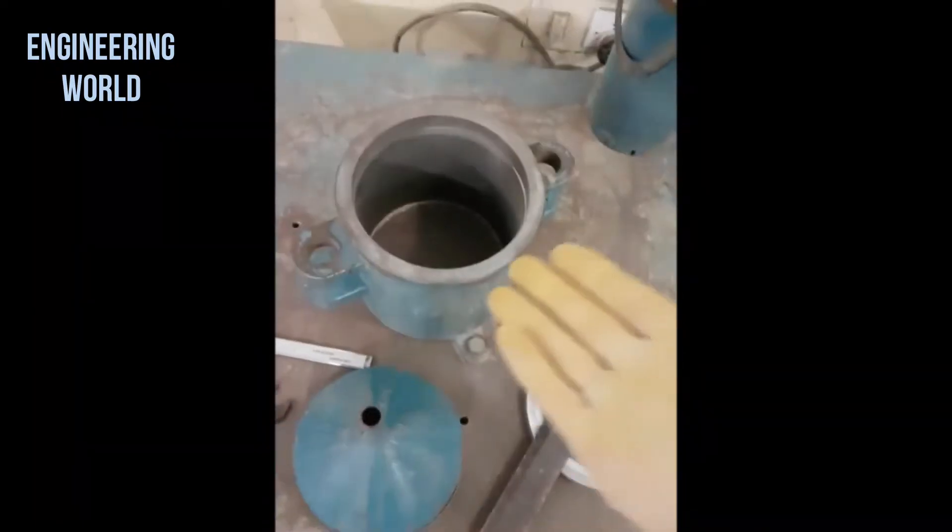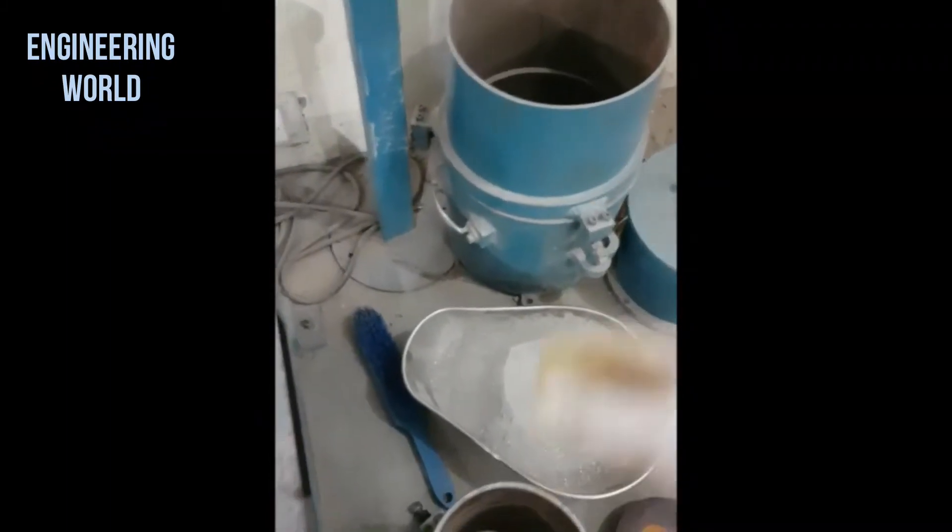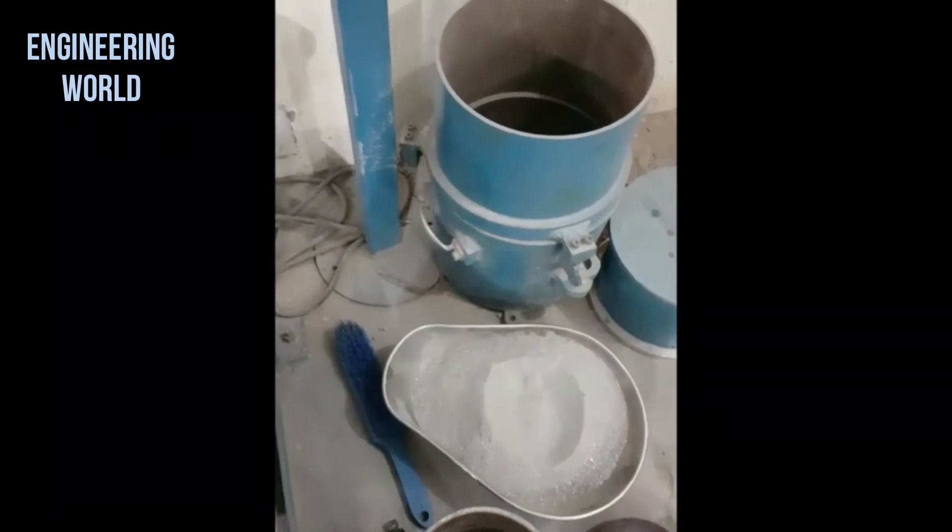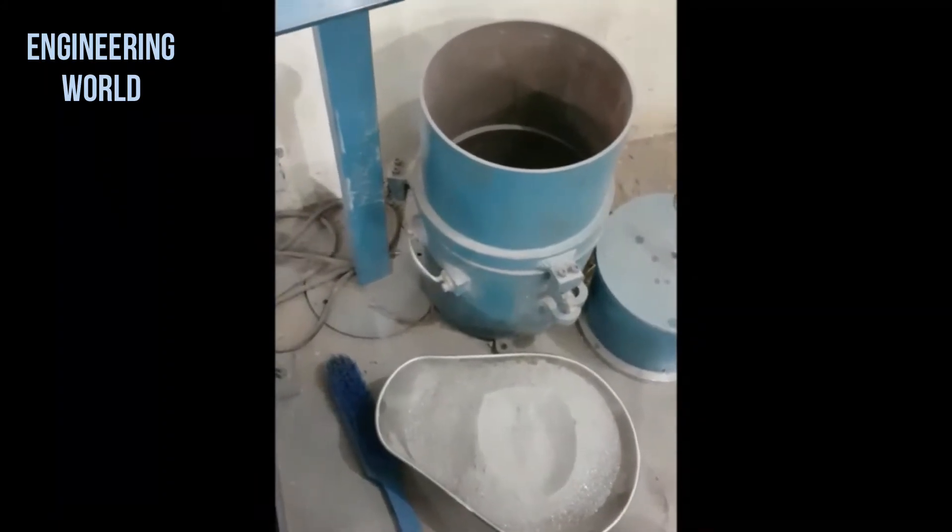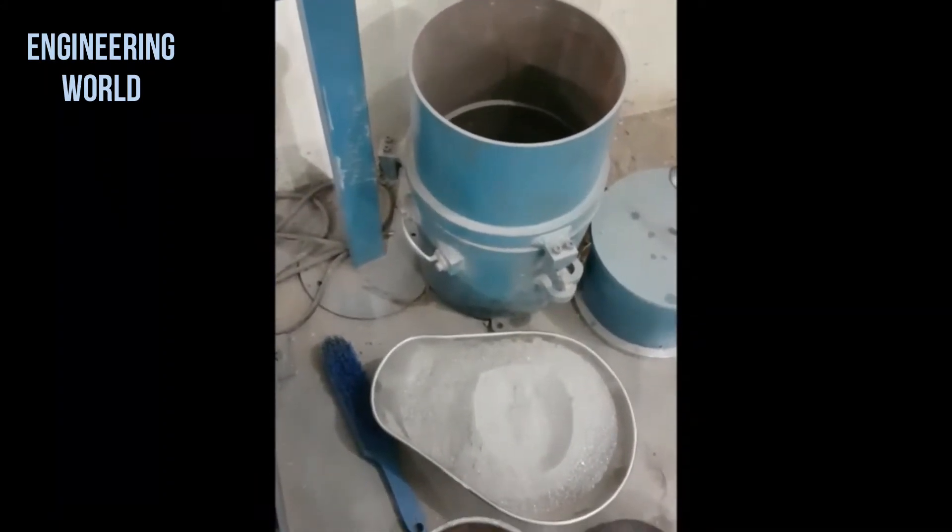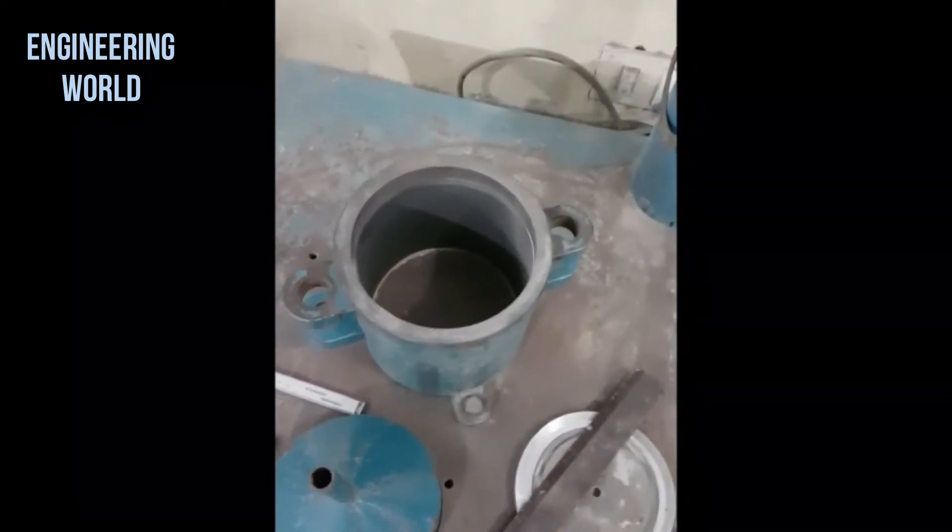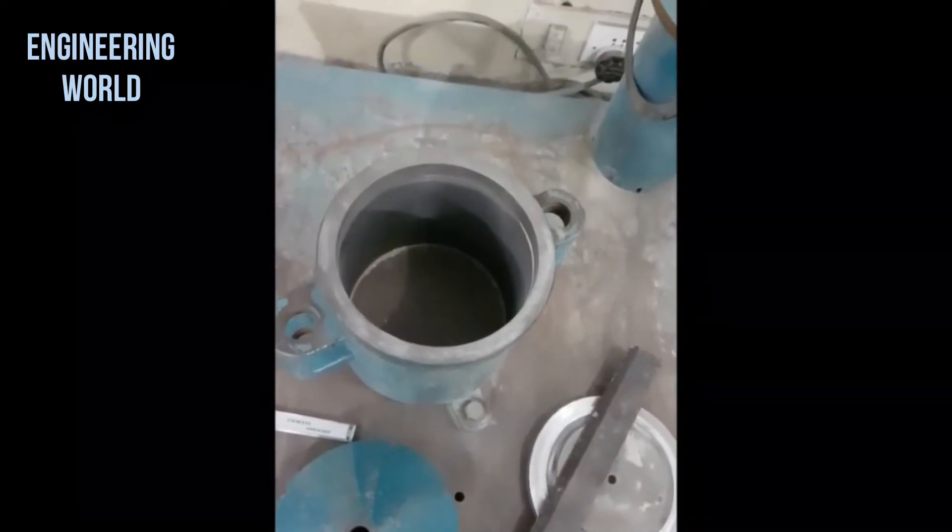Here fixed on the vibrating table we have the 0.1 cubic feet mold and to the side we have the 0.5 cubic feet mold. The larger mold is used for coarser-grained aggregates such as gravel while the smaller one is used for fine-grained soil like sand.